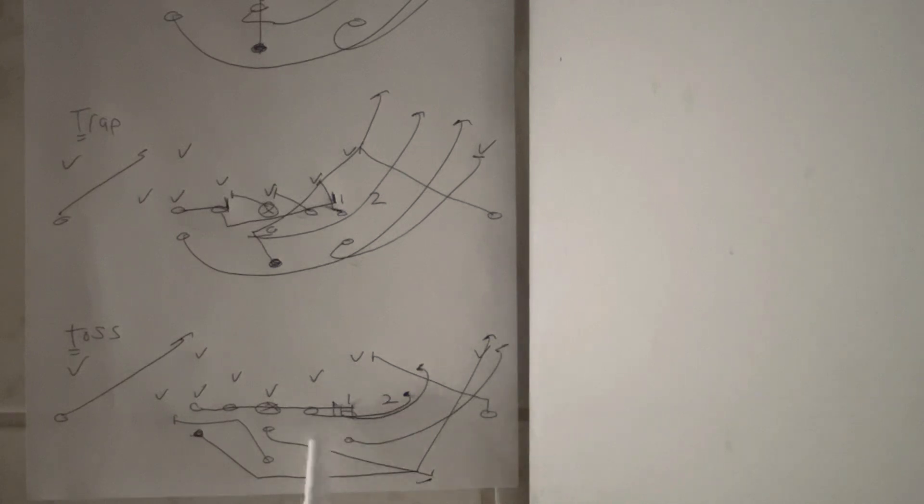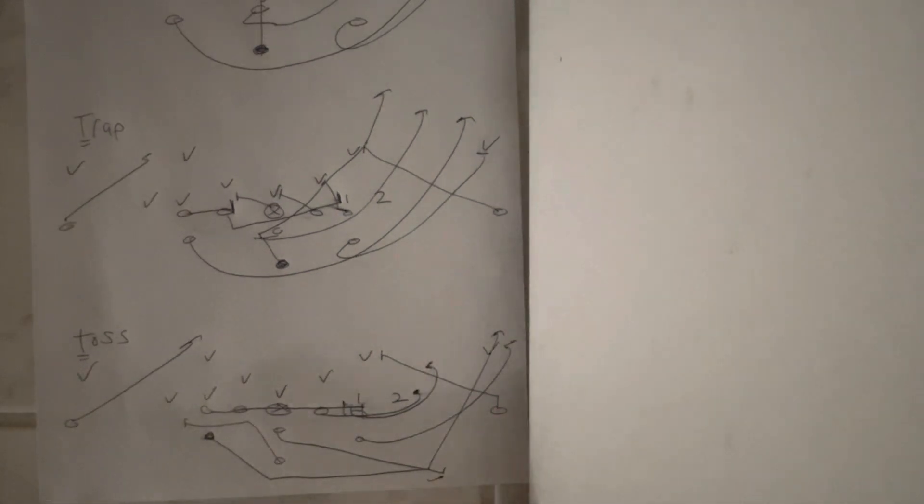If the tackle has to block number two, the guard has to overlap him to block the mic, or else you're outnumbered. You triple scoop the backside, cut off with the receiver.